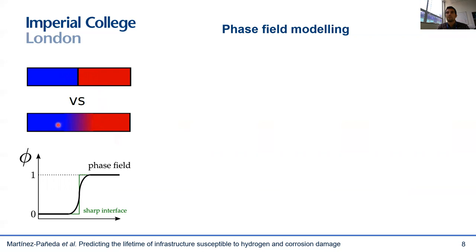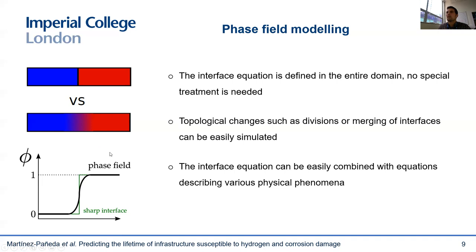There are multiple benefits associated with this diffuse interface idea. One is that the interface equation is defined in the entire domain, so there is no need for special treatment of the interface. Another benefit is that topological changes, such as divisions or merging of interfaces, can easily be simulated without ad hoc criteria. A third benefit is that the interface equation can be easily combined with equations describing various physical phenomena, making it very well suited for multi-physics problems.